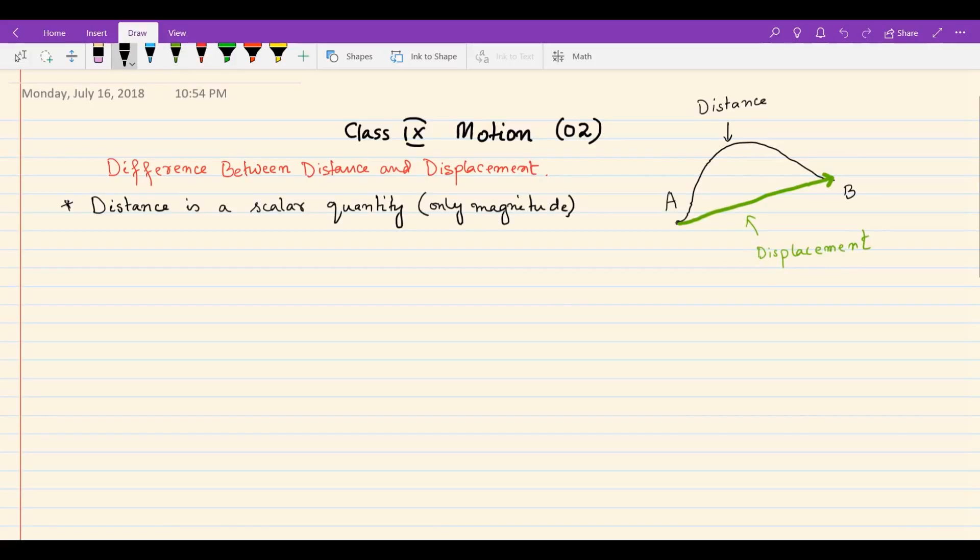Distance is a scalar quantity, that is magnitude, but displacement is a vector quantity, that is both the magnitude and the direction. Scalar and vector, we will discuss more about them later.